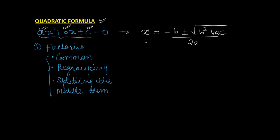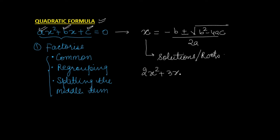The quadratic formula basically gives us the solutions, or the roots — both mean the same — of any quadratic equation. For example, suppose we have 2x² + 3x − 2 = 0 and we have to find the solution. We apply the quadratic formula, but we must determine a, b, and c first.